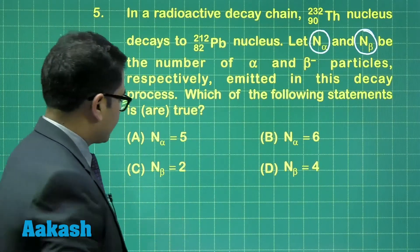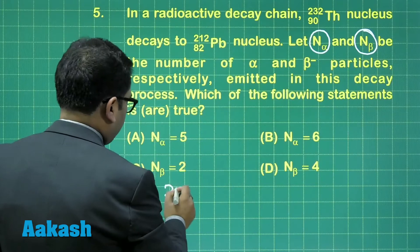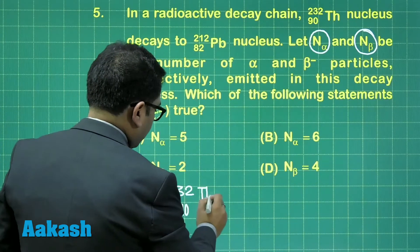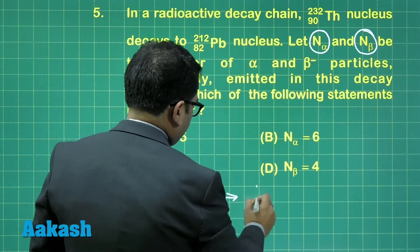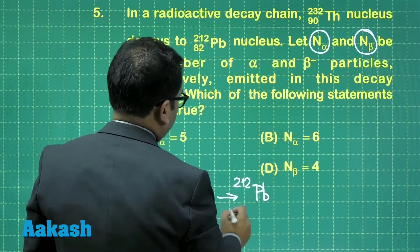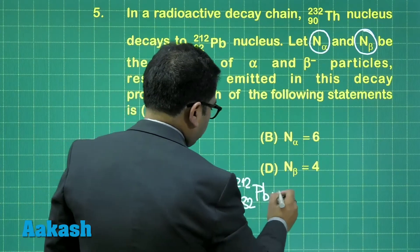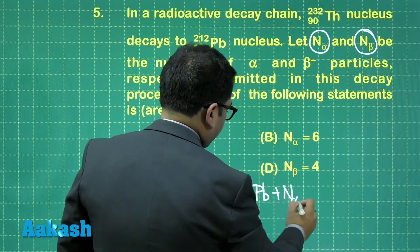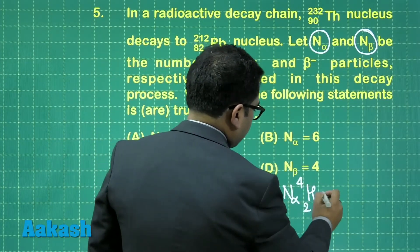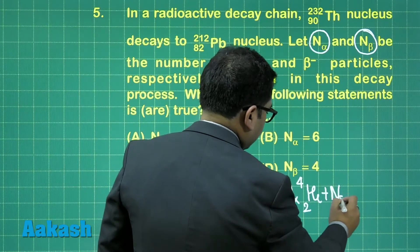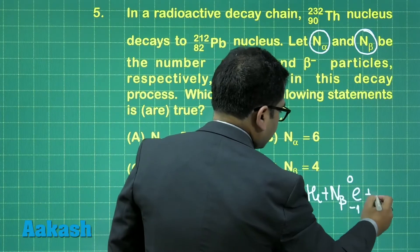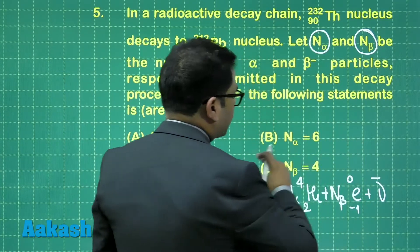Now we need to calculate the number of alpha particles and the number of beta particles which are emitted. Let's make the equation here: Thorium-232 with atomic number 90 is going to be converted into lead-212 with atomic number 82, plus N_alpha - the number of alpha particles. The alpha particle is the helium nucleus.